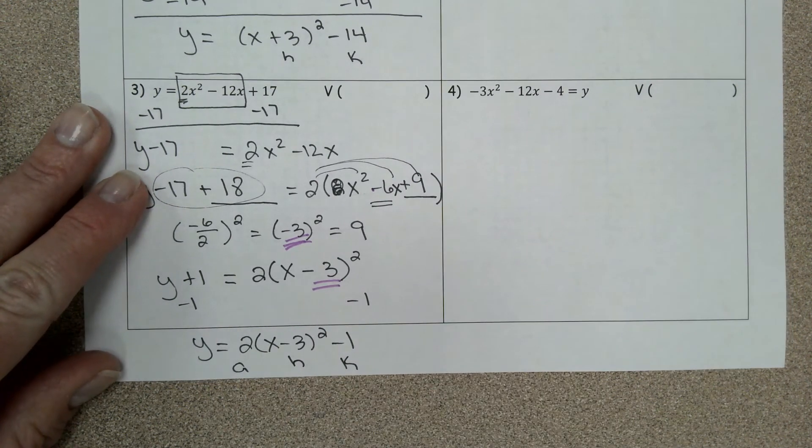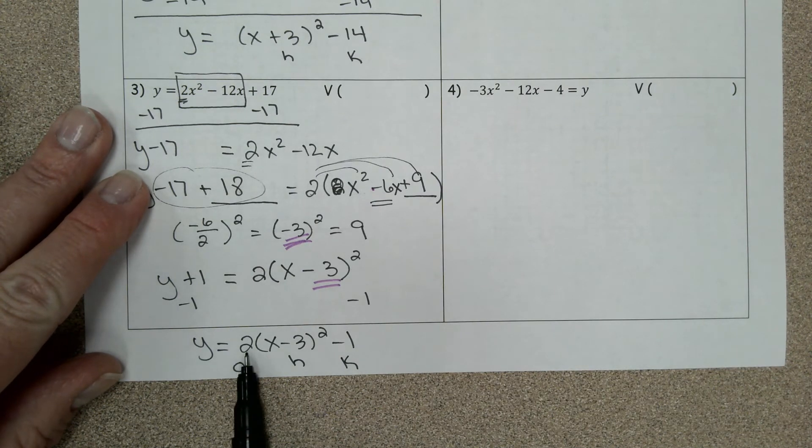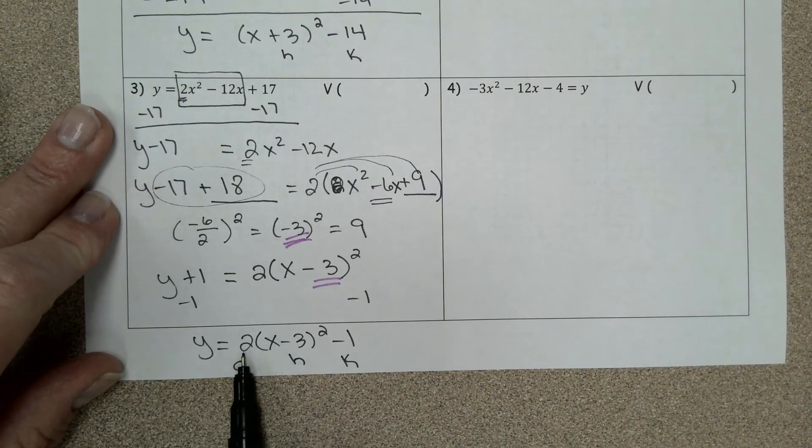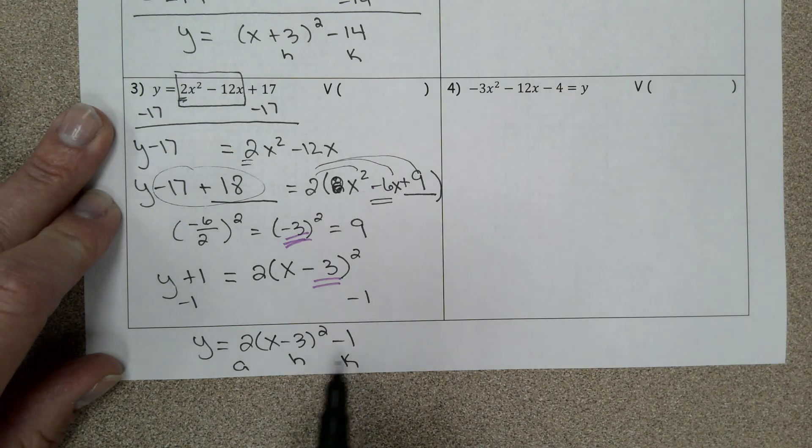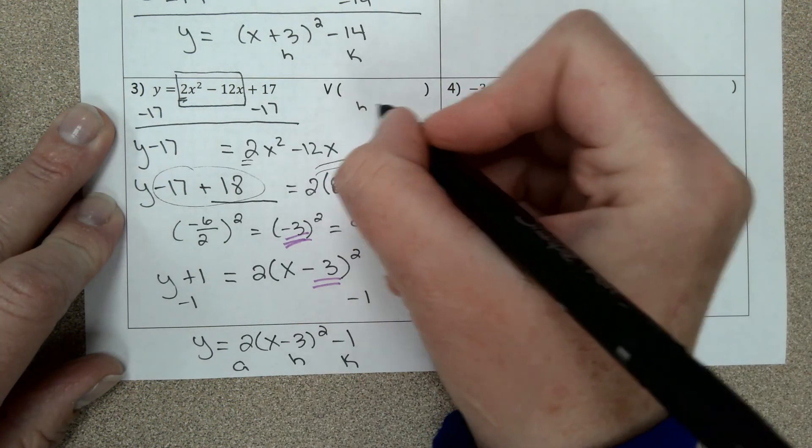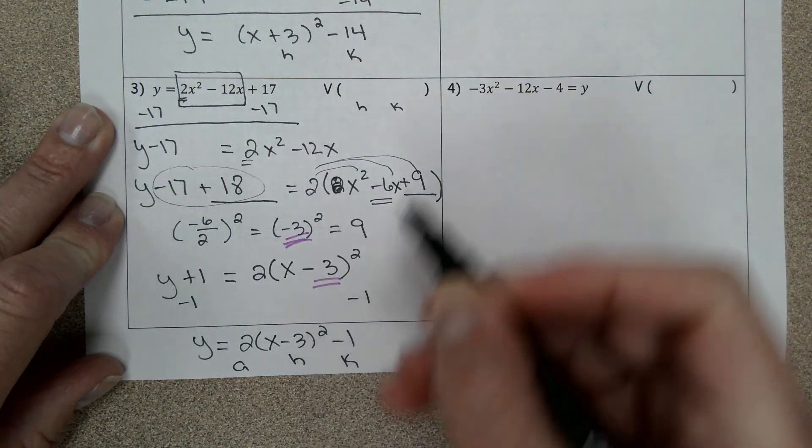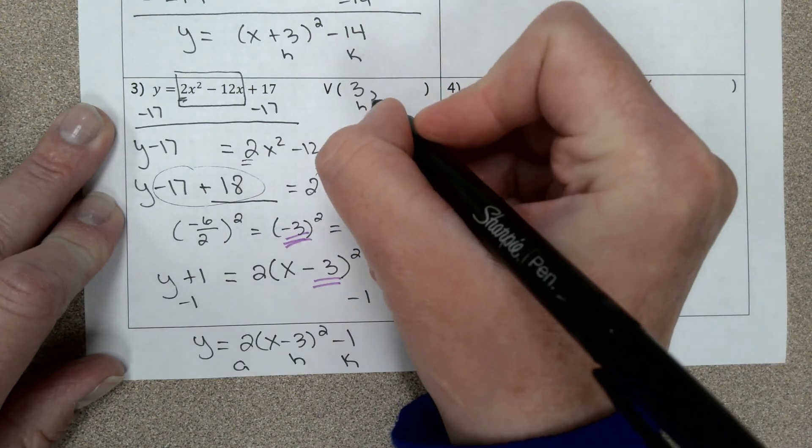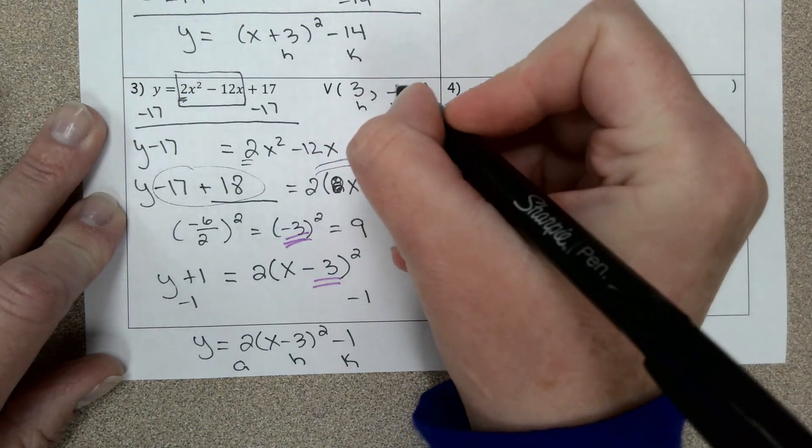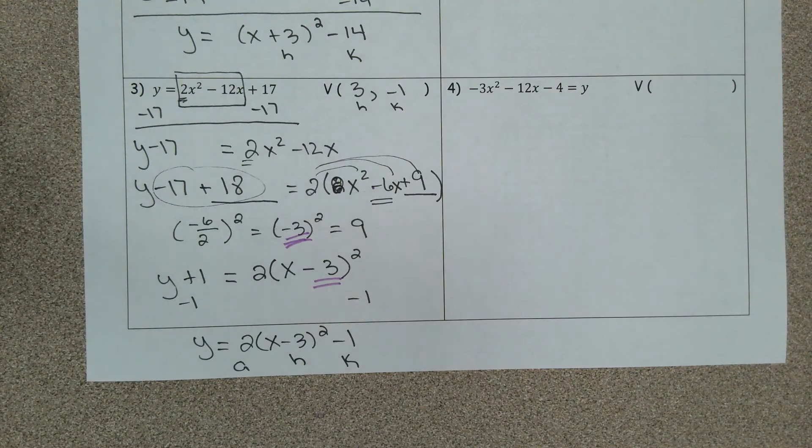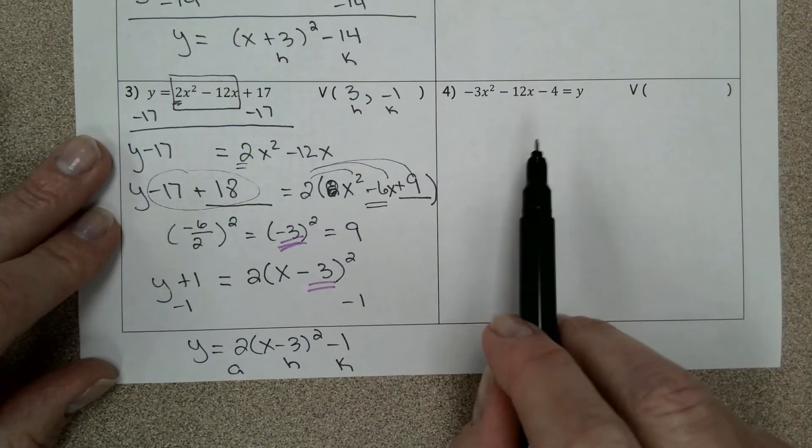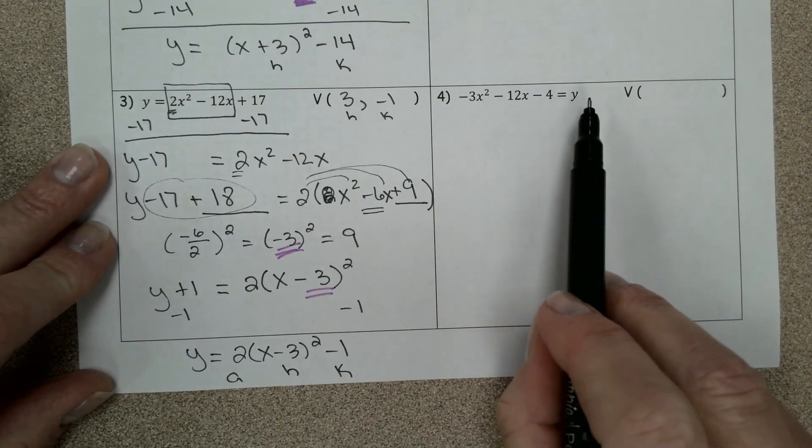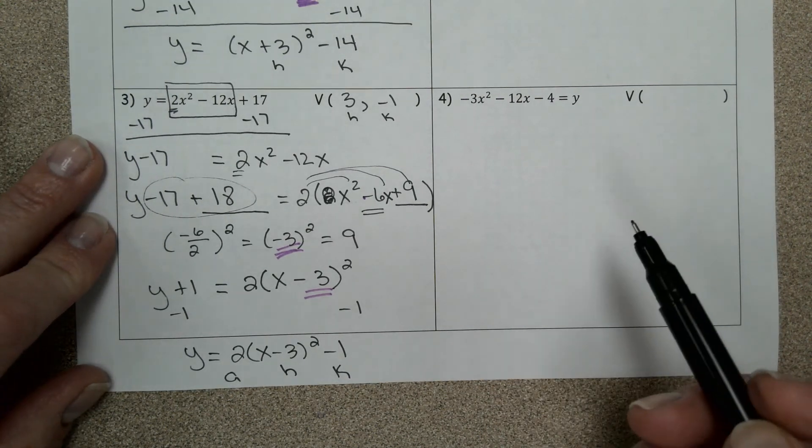So in vertex form you have a, h, and k. I could tell you that this stretched by a factor of 2 and it went right 3 and down 1. H and k work together to tell you what your vertex is. So your h always changes sign, so it's located at 3, negative 1.